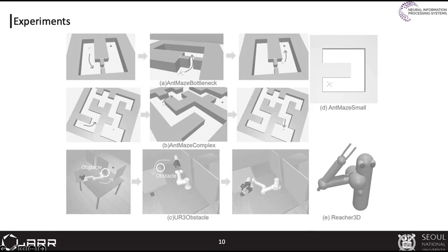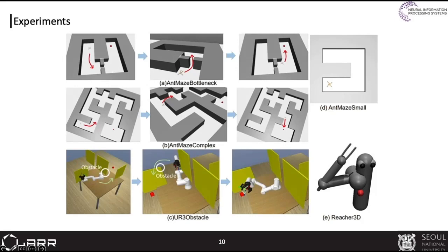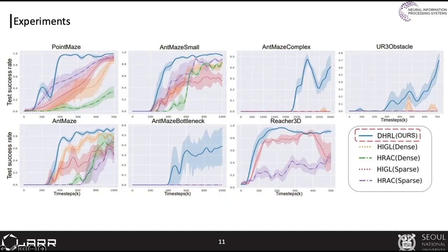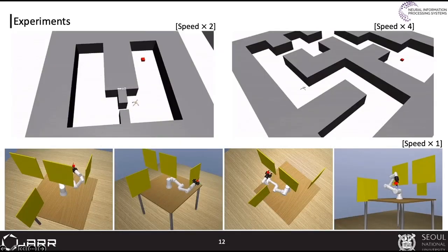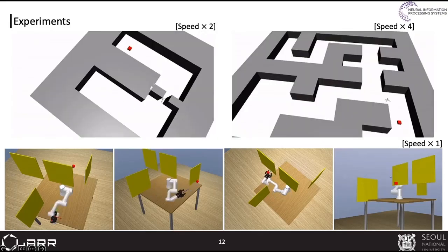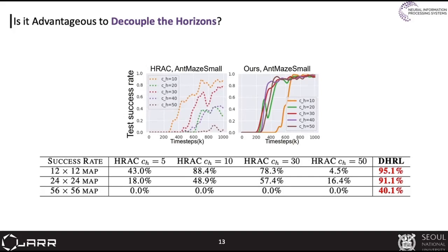We evaluated DHRL on typical HRL environments and more sparse and long-horizon tasks. Thanks to decoupling the horizons of the levels, DHRL shows high data efficiency and significantly outperforms prior state-of-the-art algorithms. This slide visualizes the behavior of the learned agent in long-horizon and cluttered environments. To verify whether decoupling horizons is advantageous, we show the performance of DHRL at various high-level intervals. Unlike previous methods, DHRL is robust to the interval and performs well regardless of the interval size and the environment size.